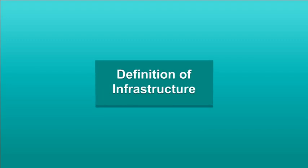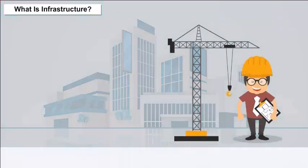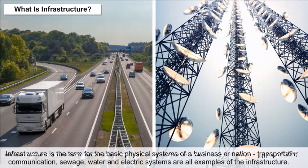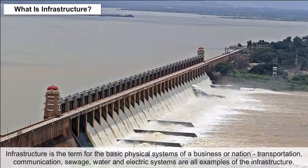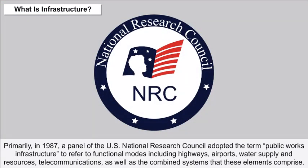Definition of Infrastructure. What is infrastructure? Infrastructure is the term for the basic physical systems of a business or nation. Transportation, communication, sewage, water, and electric systems are all examples of infrastructure.